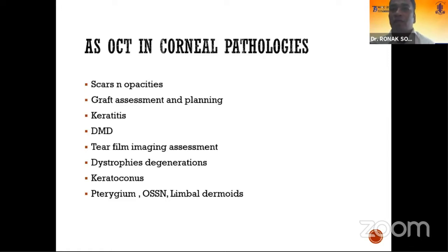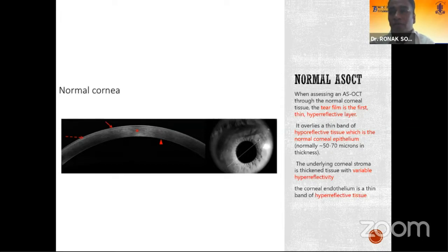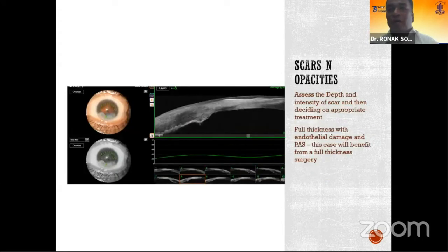The most important area to assess is the cornea, where you can find scars, opacity, graft assessment, pre and post-op planning, infectious keratitis, Descemet membrane detachments, keratoconus, surface lesions like pterygium, limbal dermoids, OSSN, and dystrophies and degeneration. A normal anterior segment OCT shows a first layer of the tear film, which is hyperreflective, overlying a band of hyporeflective layer which is the normal corneal epithelium, and underlying variable hyperreflectivity of the corneal stroma and endothelium. Scars and opacities appear as hyperreflective tissue.